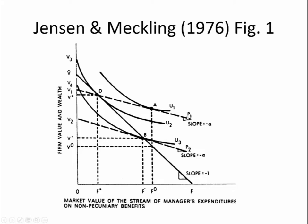So we have this new line. We know the slope of it, and we know that the line must pass through D because this is where the manager was previously and where investors expected him to stay. We now have a new budget constraint that starts at V1 and goes to P1. And here's the interesting thing — that line is tangent to U1, which is a higher level of happiness for the manager than U2 was. But in order to achieve this higher level of happiness, the manager has to move their consumption of non-pecuniary benefits from point D over to point A.